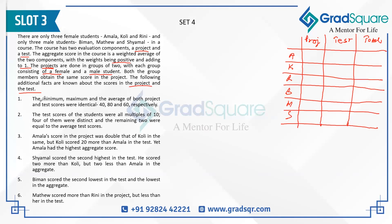The first statement: the minimum, maximum, and average of both project and test scores were identical — 40, 80, and 60 respectively. On project, since students work in pairs and get equal scores, if one student gets 40 the partner also gets 40. Similarly for the maximum of 80 — both partners must score 80.